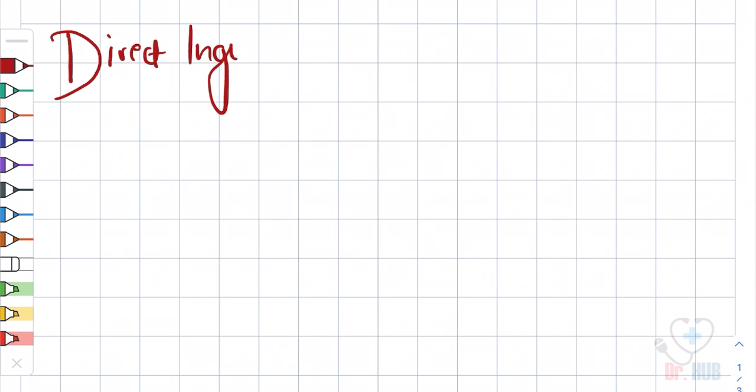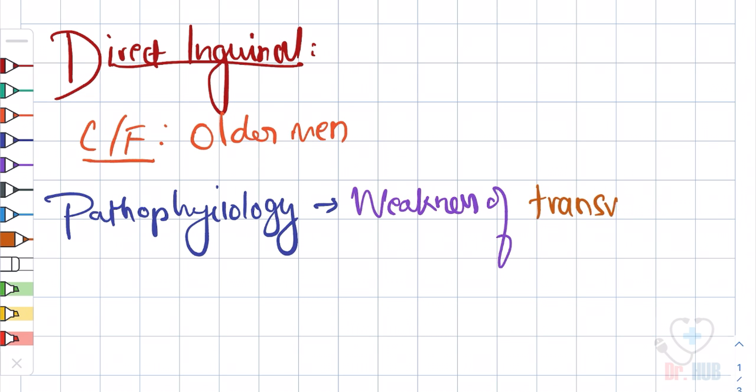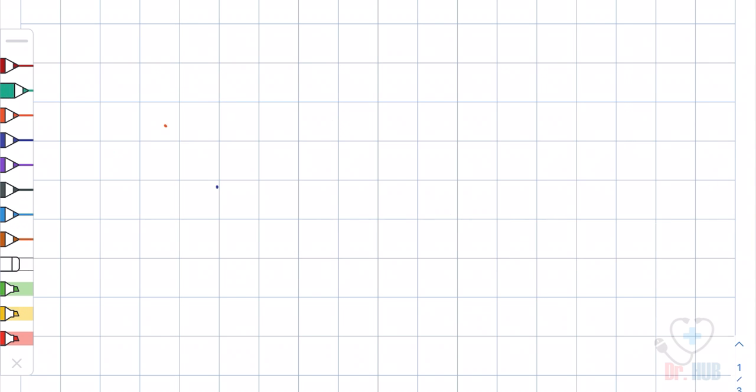Direct inguinal hernia. Clinical features: mainly in older men. Pathophysiology is weakness of the transversalis fascia. Anatomy: